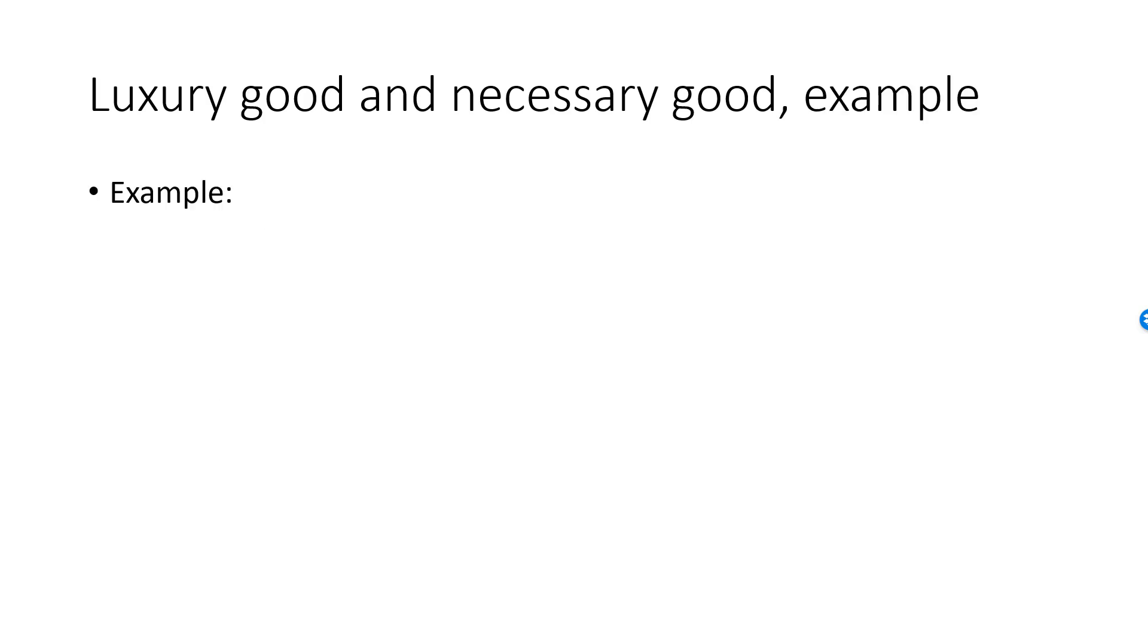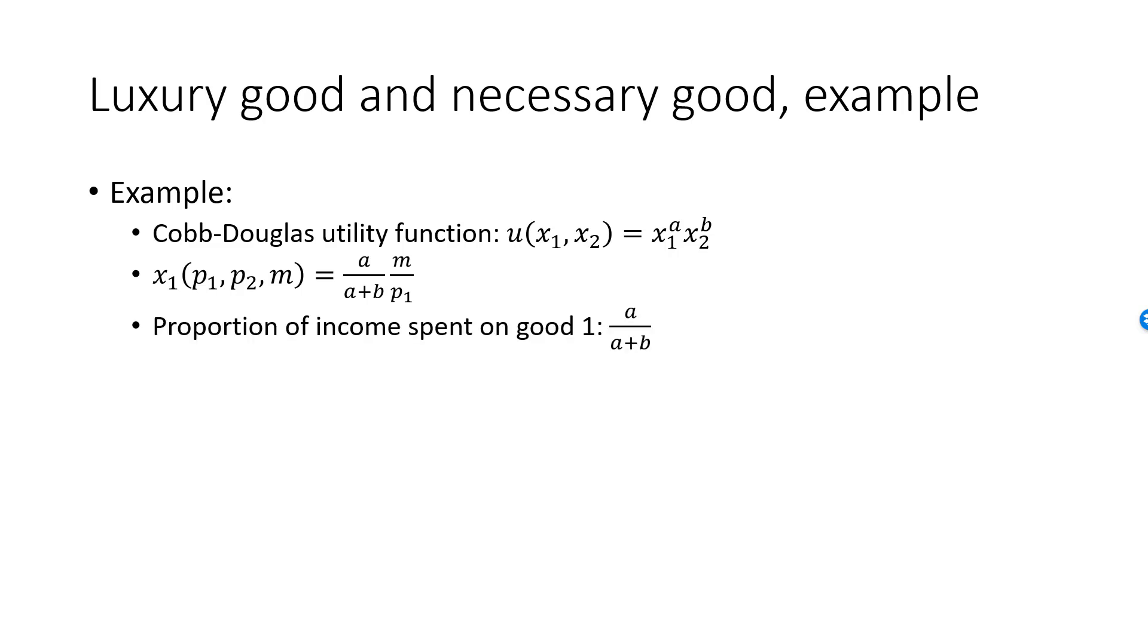Let's do some examples. In my first example of a luxury versus necessary good, I will look at Cobb-Douglas preferences. I have a utility function U equal to X1 to the A times X2 to the B. The demand function for good one is given by A over A plus B times M over P1. If you multiply this by P1 and divide by M, you see that the proportion of income spent on good one is A over A plus B.